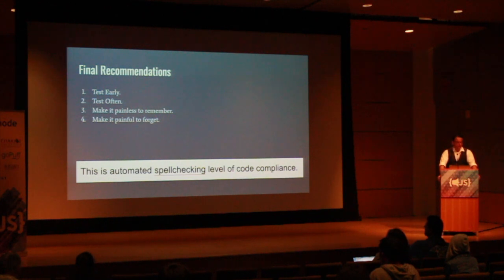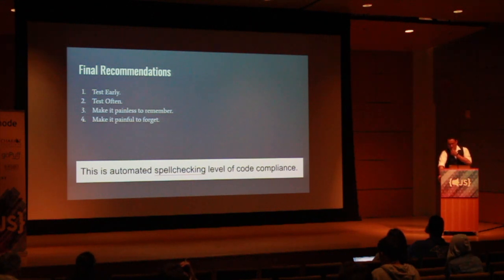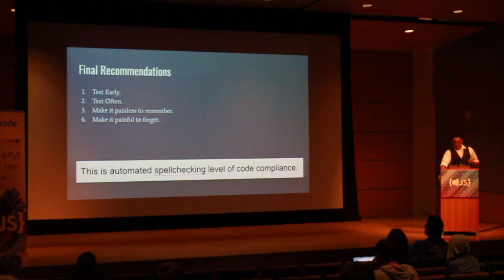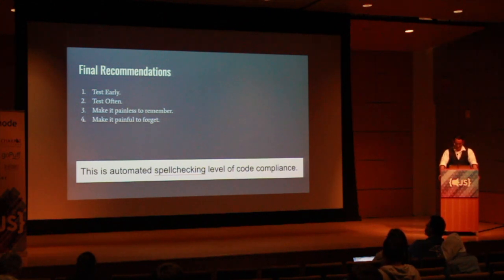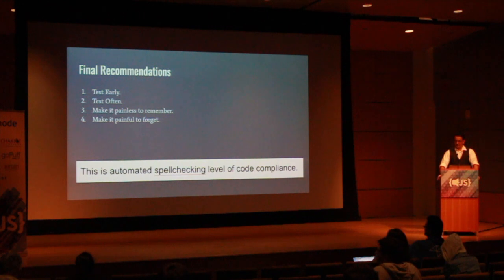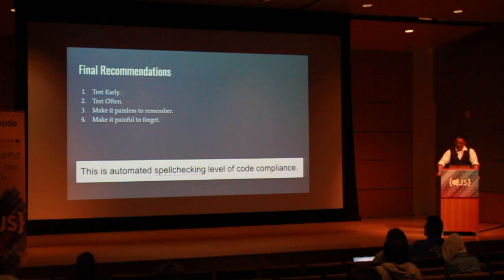Final recommendations: test early at every stage of development, and test often. Make it painless to remember — by building these automated features into your code base, it'll make it easier for automated screening at every level. Make it painful to forget. You need to break the build if people aren't coding properly. Accessibility errors should break your build, and failure to meet accessibility standards is a failure in your code.